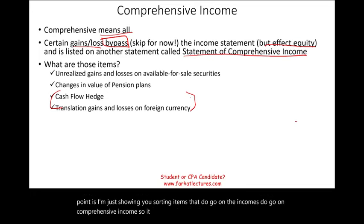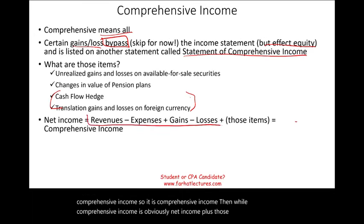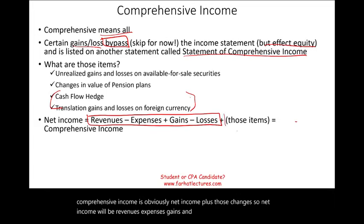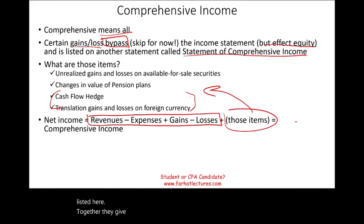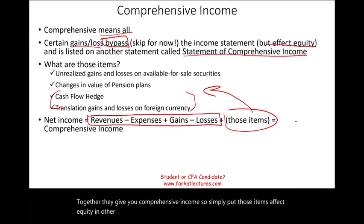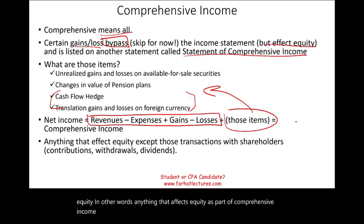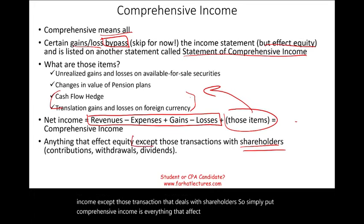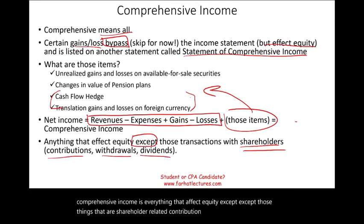So what is comprehensive income then? Comprehensive income is net income plus those other changes. Net income includes revenues, expenses, gains, and losses, plus those items I listed — together, they give you comprehensive income. Simply put, anything that affects equity is part of comprehensive income except transactions that deal with shareholders, such as contributions, withdrawals, and dividends. Those affect equity, but they are not part of comprehensive income — they're listed separately.